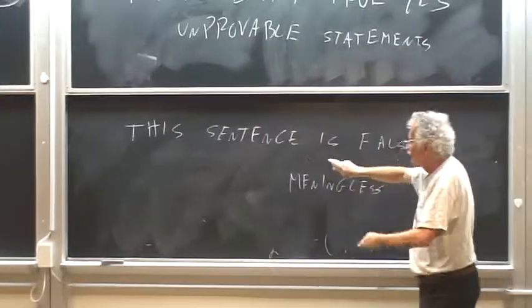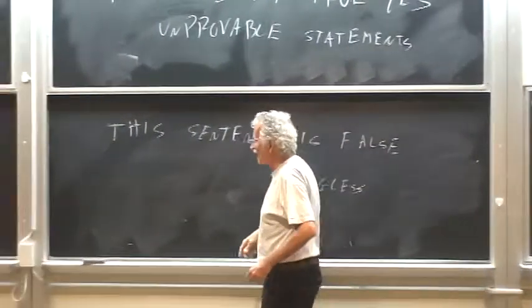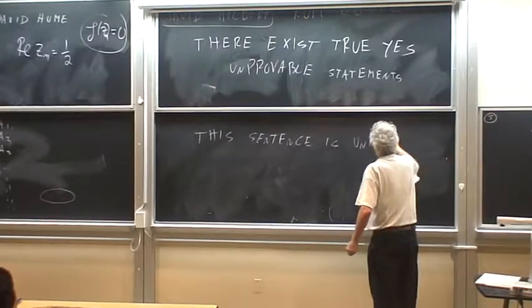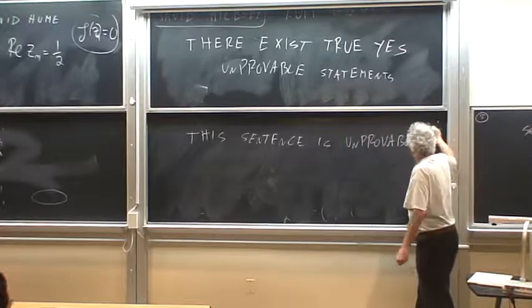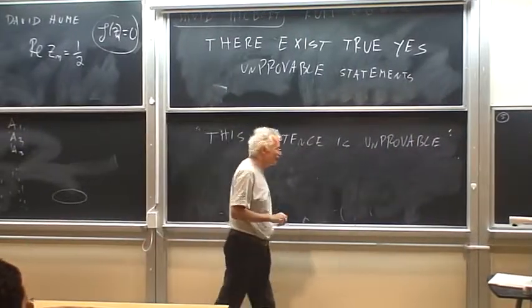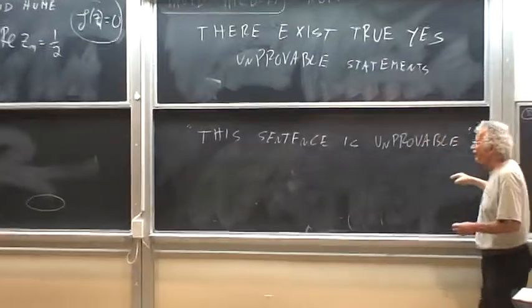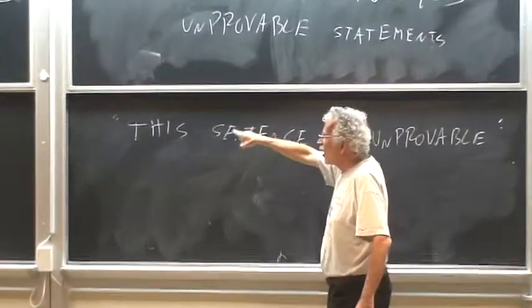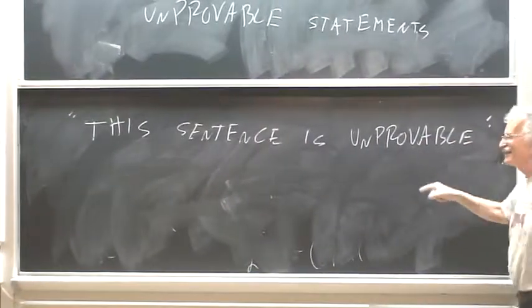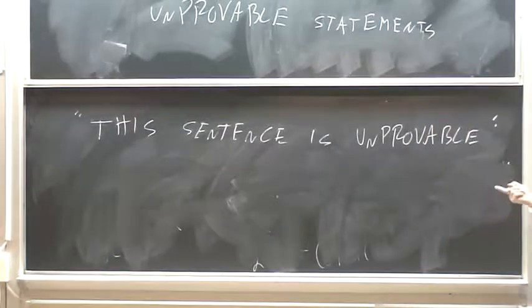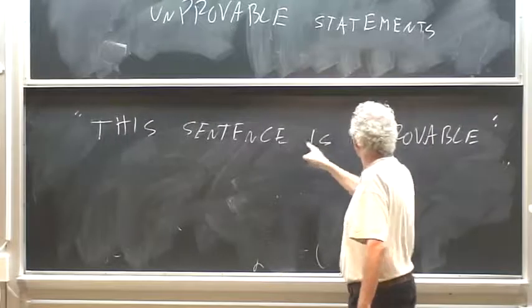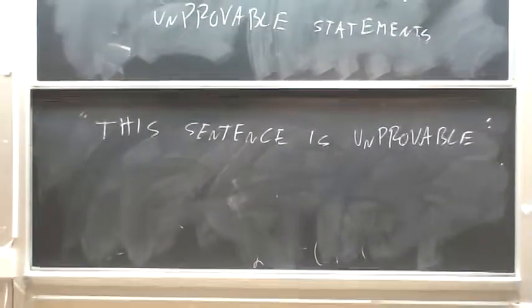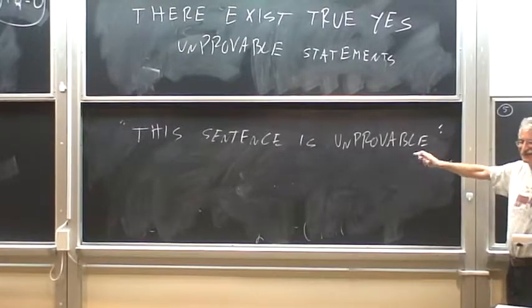And what Gödel did, he took a takeoff from this statement, this sentence is false. He constructed a mathematical statement. This sentence is unprovable. And this sentence, this sentence is unprovable, must be true. Suppose, by contradiction, it would have been provable. It would have been wrong. If the sentence, quote, this sentence is unprovable, is wrong, it means, this sentence is provable. But if something is provable, hopefully, it's correct. So this sentence is correct. So this sentence is unprovable, contradiction.